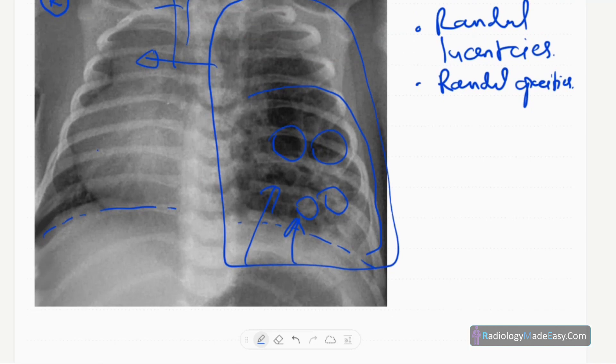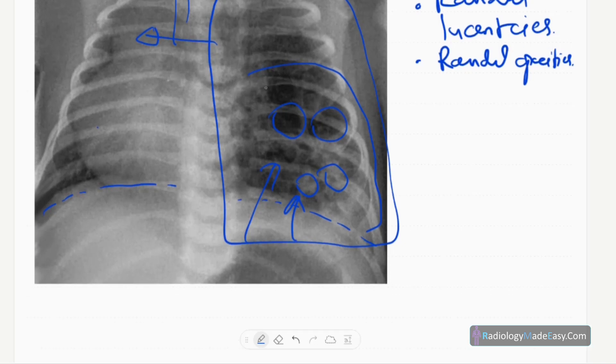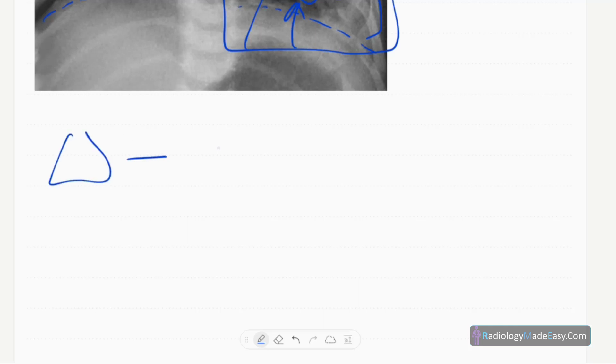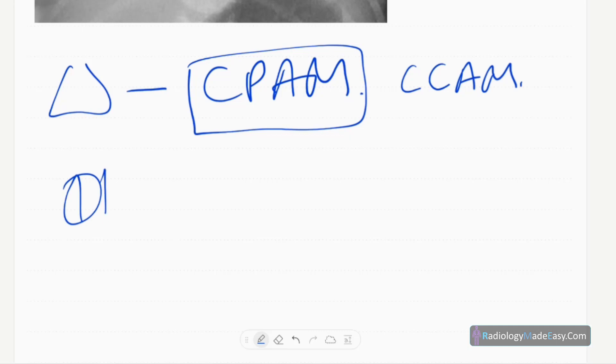The diagnosis in this case is congenital pulmonary airway malformation. Early it was known as congenital cystic adenomatoid malformation (CCAM). Now we call it CPAM. For differential diagnosis for cystic lucencies...